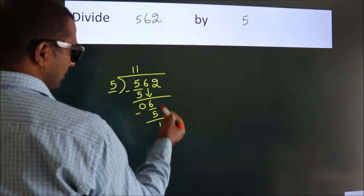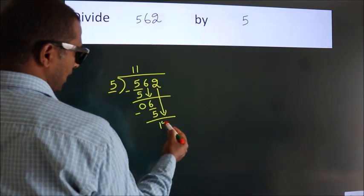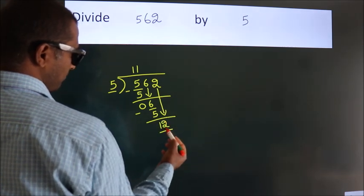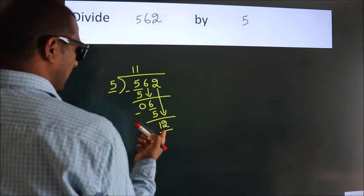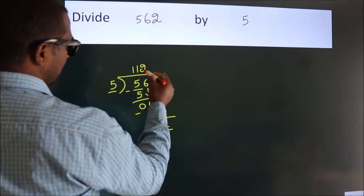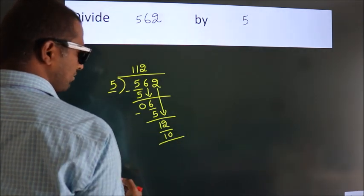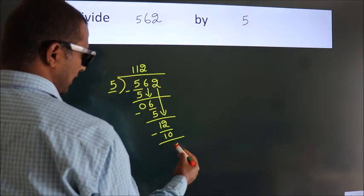After this, bring down the beside number. So 2 down. So 12. A number close to 12. In 5 table is 5 twos, 10. Now we subtract. We get 2.